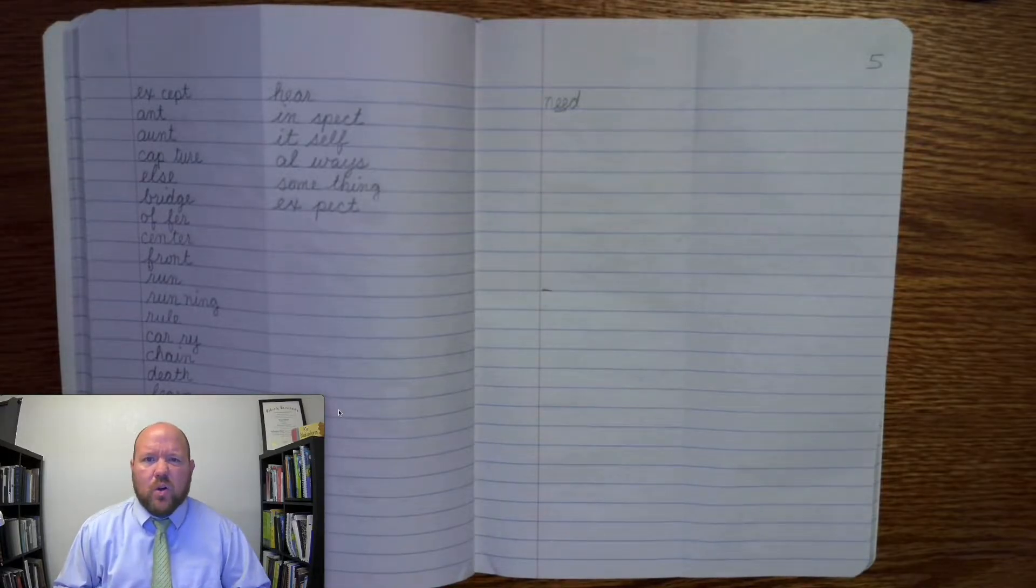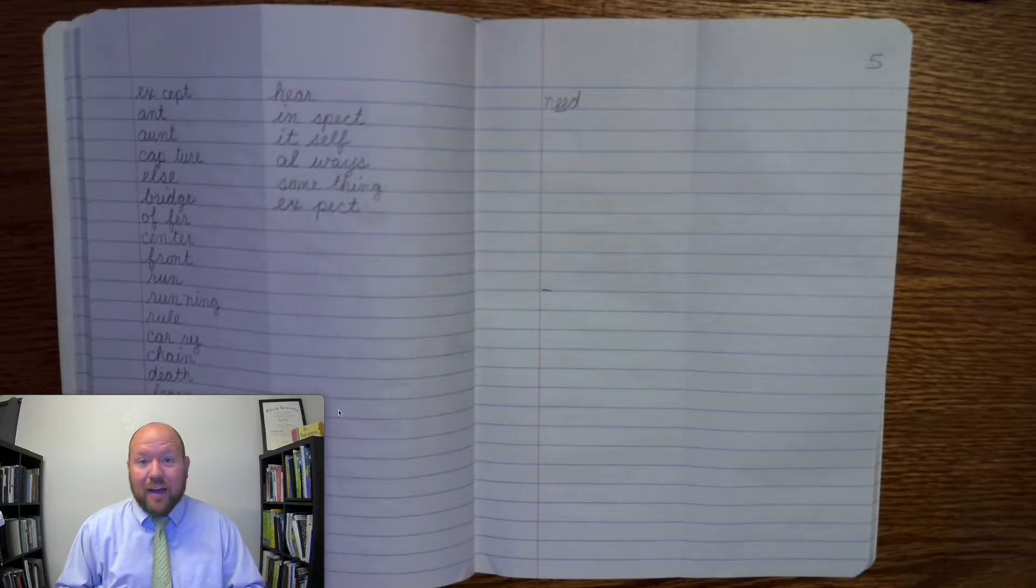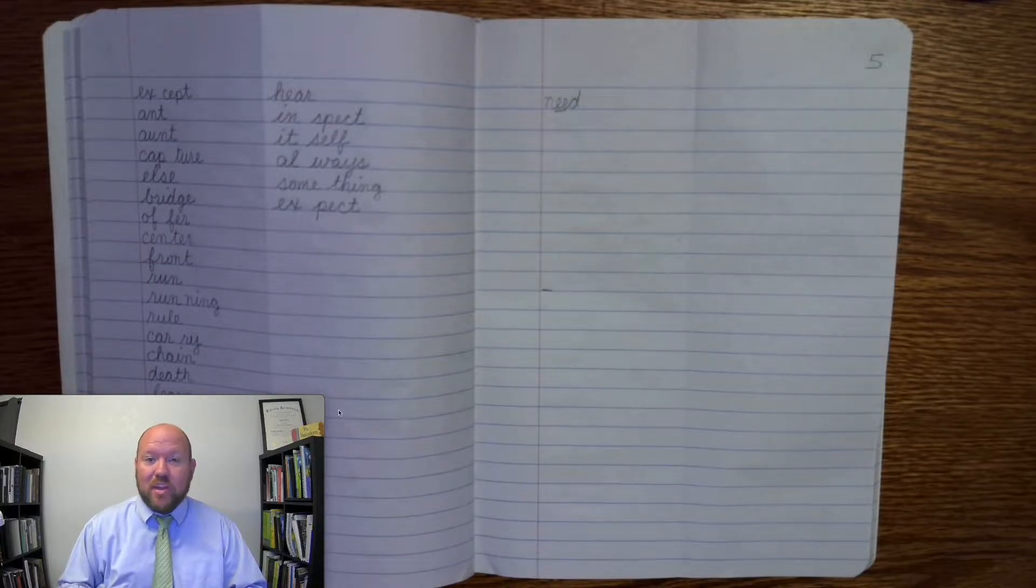The next word is the word thus. Thus isn't a word we use a whole lot anymore. It has the idea of cause and effect. It could also be replaced by the word therefore. So, I like ice cream, thus I went to the ice cream store. Or, I like ice cream, therefore I went to the ice cream store. So we use thus to show that cause and effect.